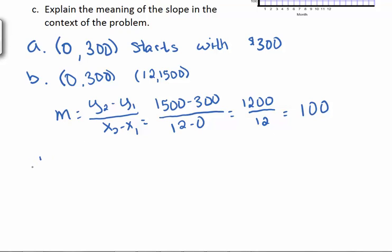So C wants to explain this meaning. The graph tells the balance in his account along with the number of months. So basically, this tells us he deposits $100 per month. And so that's the meaning of this.